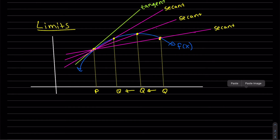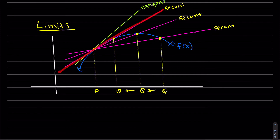Now let's talk about limits. I've drawn a function f(x) with several secant lines and a tangent at P. I've called the other points all Q. As Q approaches P — getting closer and closer — the slope of the secant line is getting closer to the slope of the tangent line.